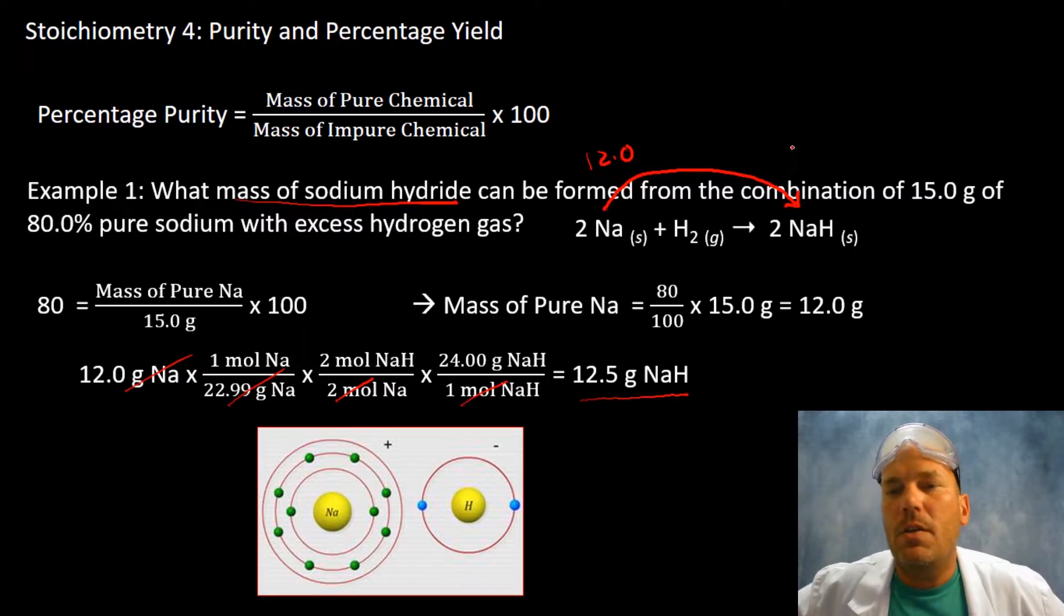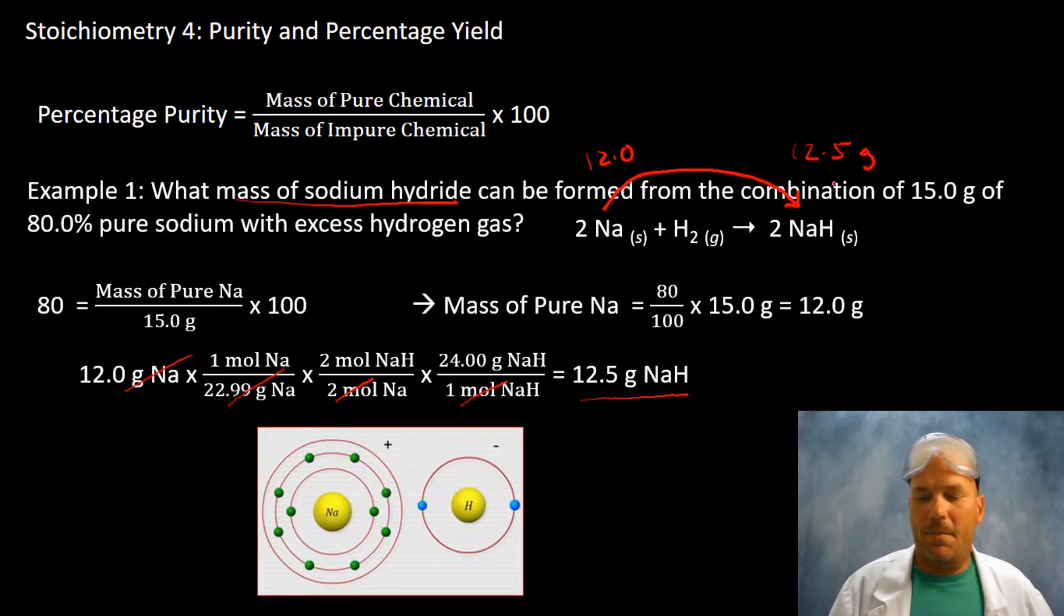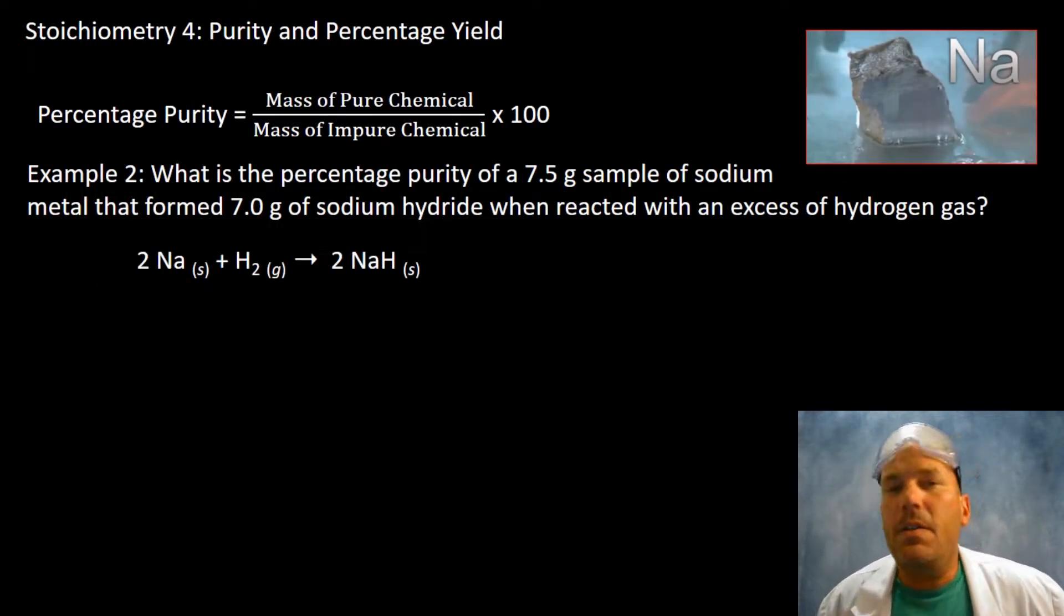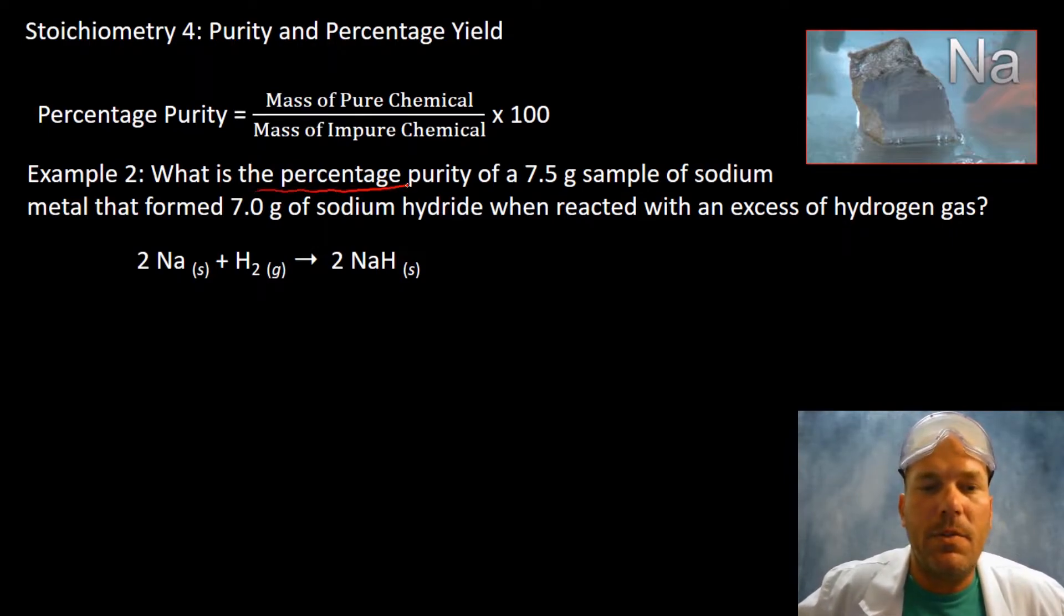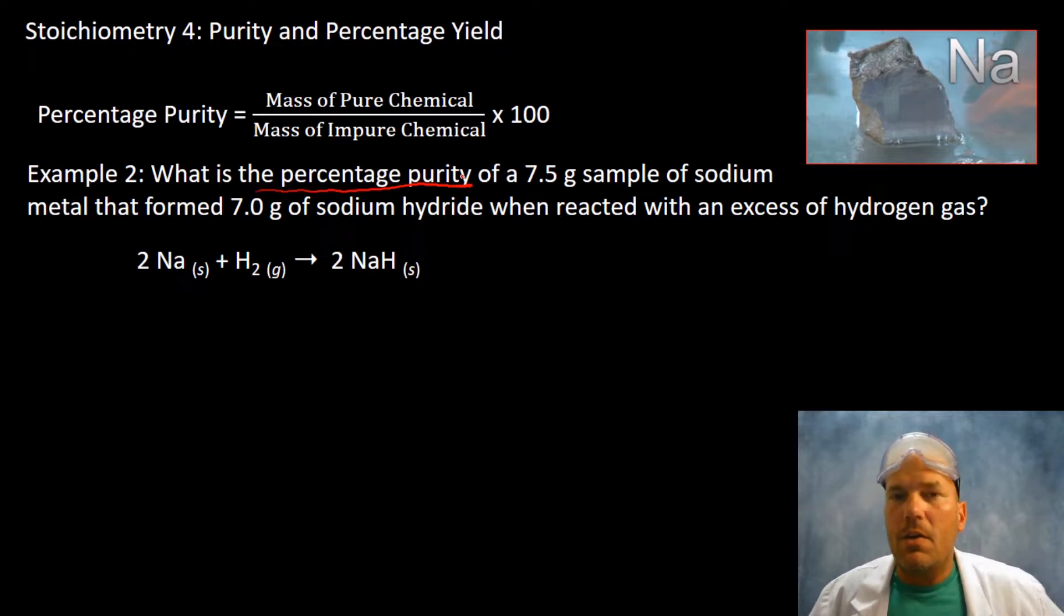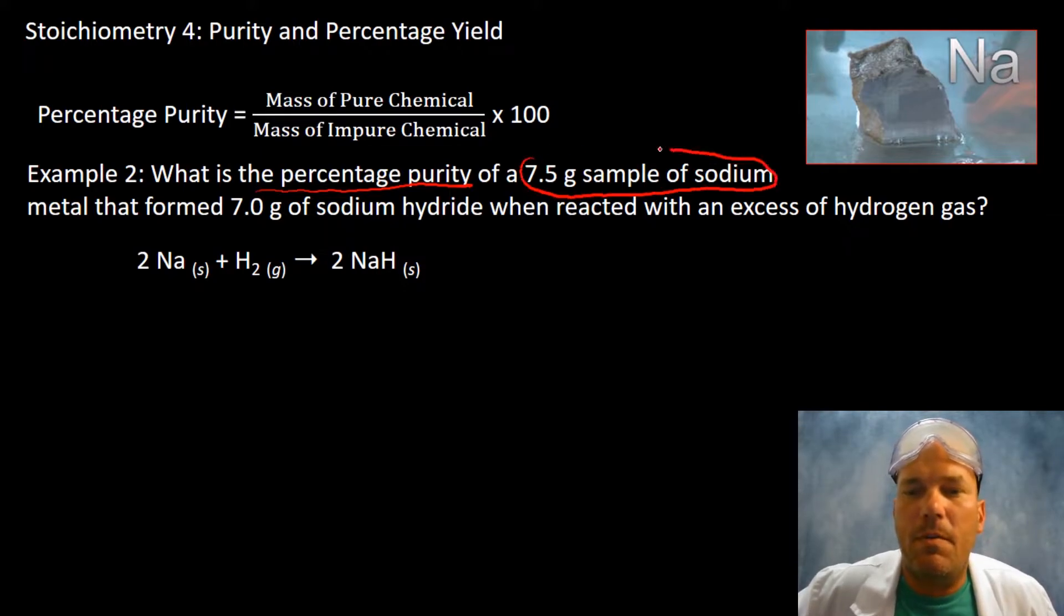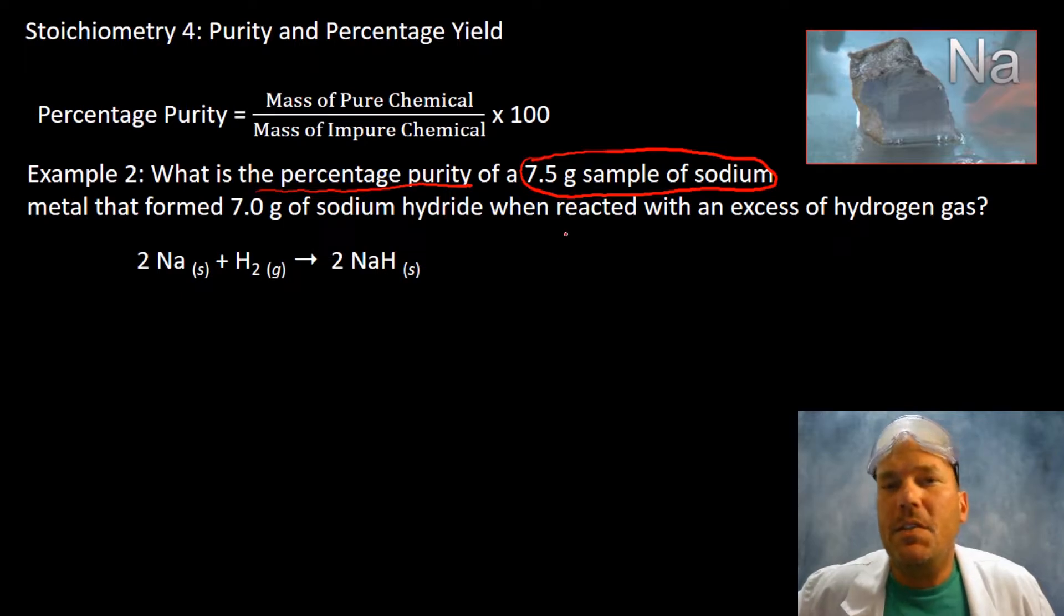So essentially we were given this and in its pure form, 15, calculated it in its pure form of 12, use stoichiometry to convert it into 12.5 grams of the product. Here's another example. This one's a little different in that you are being asked what is the percentage purity. So a little twist on this problem here. The same exact equation to save us a little bit of time here. And you have a 7.5 gram sample of sodium; this is the impure sodium, so this will go in here. Remember, this is what we're trying to find.